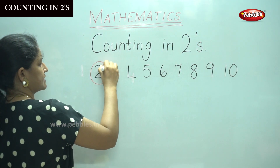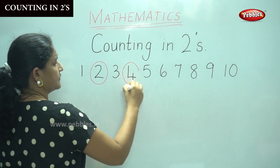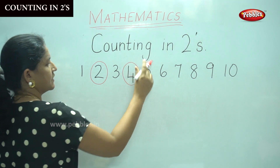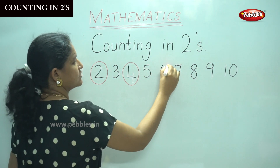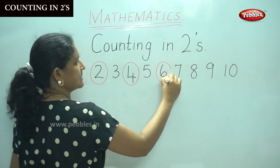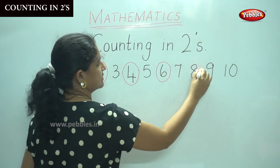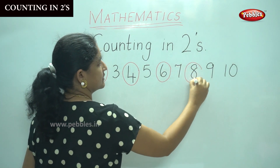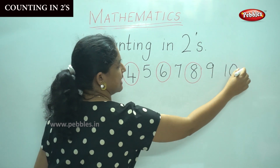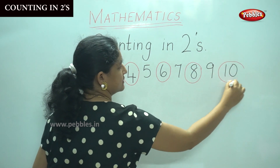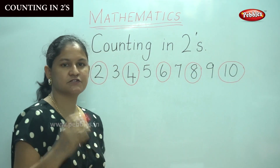Next: 3, 4, 5, 6. You will count two numbers at a time. 7, 8, 9, 10. So this is your counting in twos.